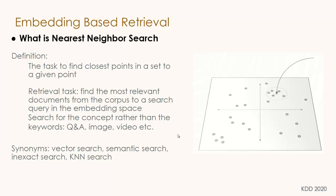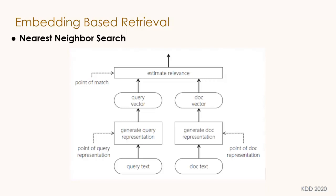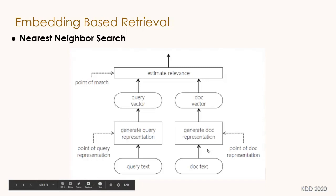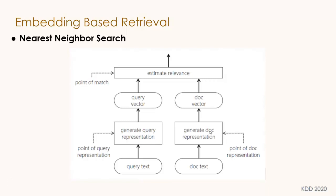In a typical nearest neighbor search system, you have query text and document text as inputs. You generate a query representation and a document representation, producing a query vector and a doc vector — which are embeddings. Then you compute a similarity score to estimate relevance between the query and document, and use it for prediction.